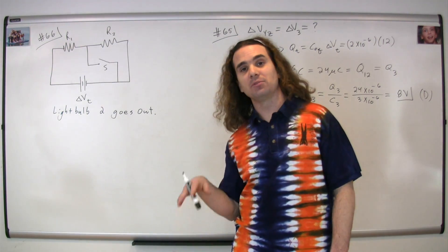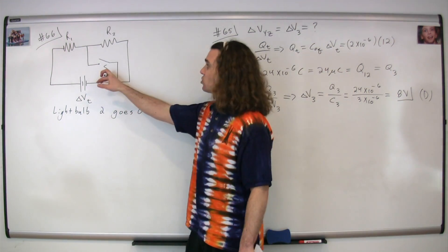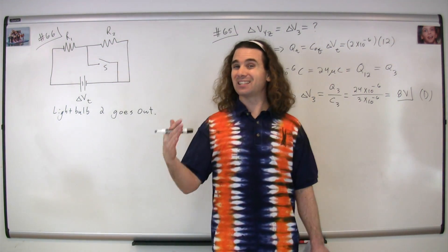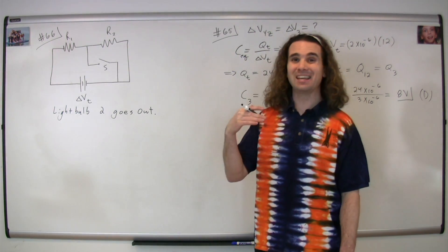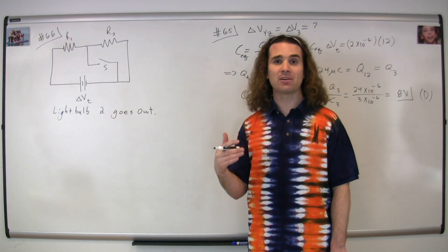Now, what happens to light bulb number one? Well, when we close the switch, none of these charges are gonna go through resistor two, they're gonna go through the switch instead, which is going to decrease the equivalent resistance of the circuit, which is going to increase the current going through the circuit because the potential difference across the battery is the same.